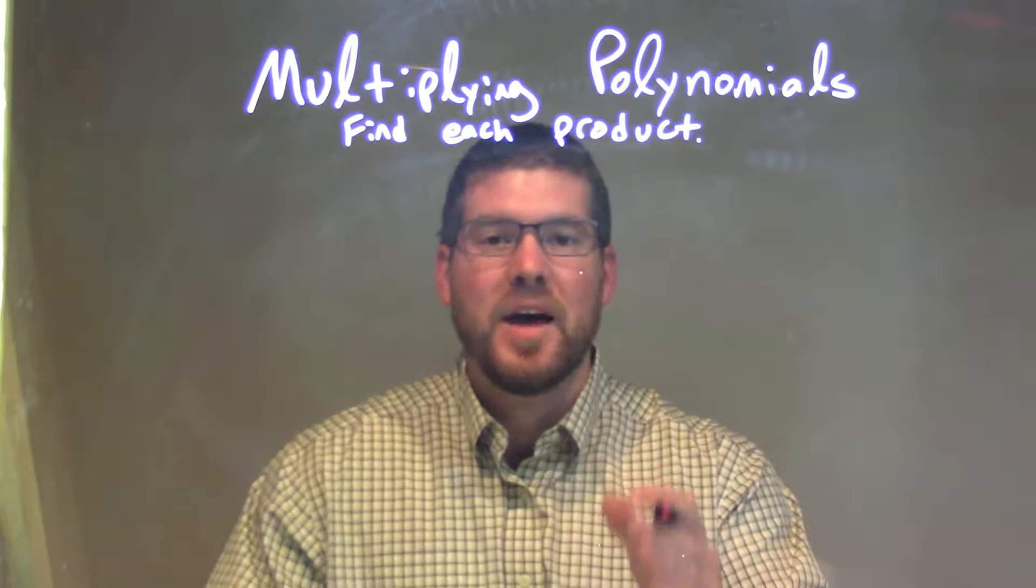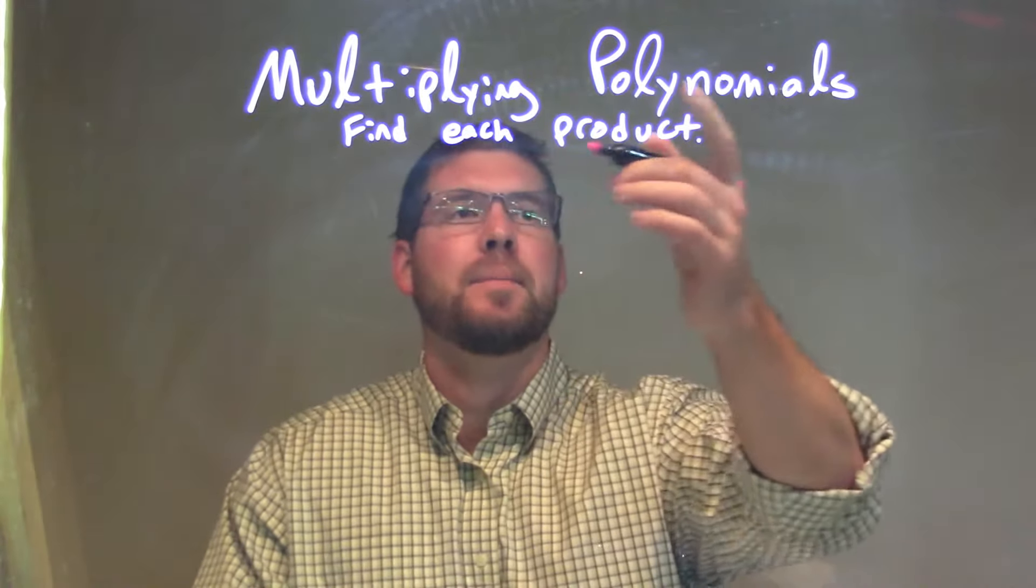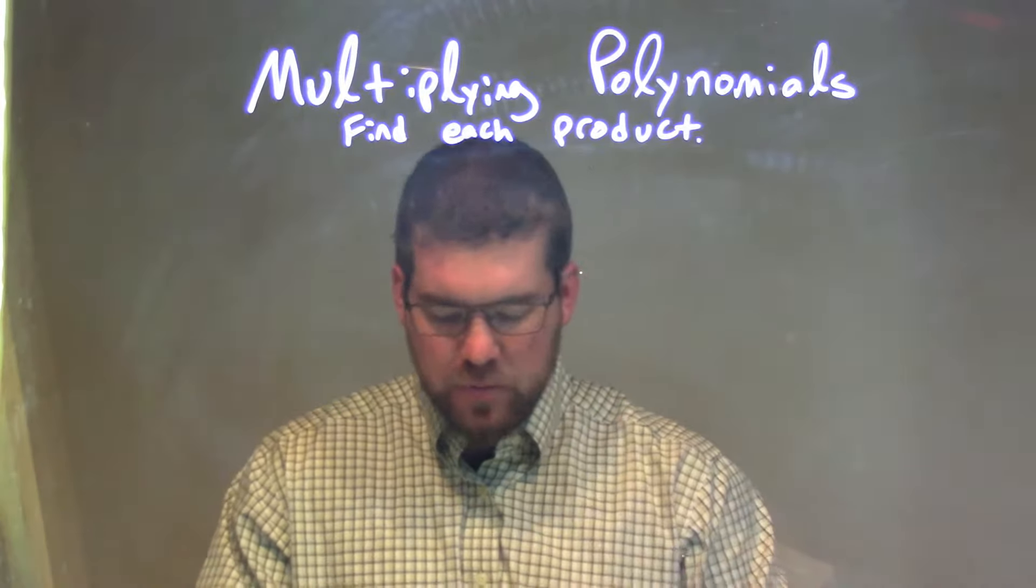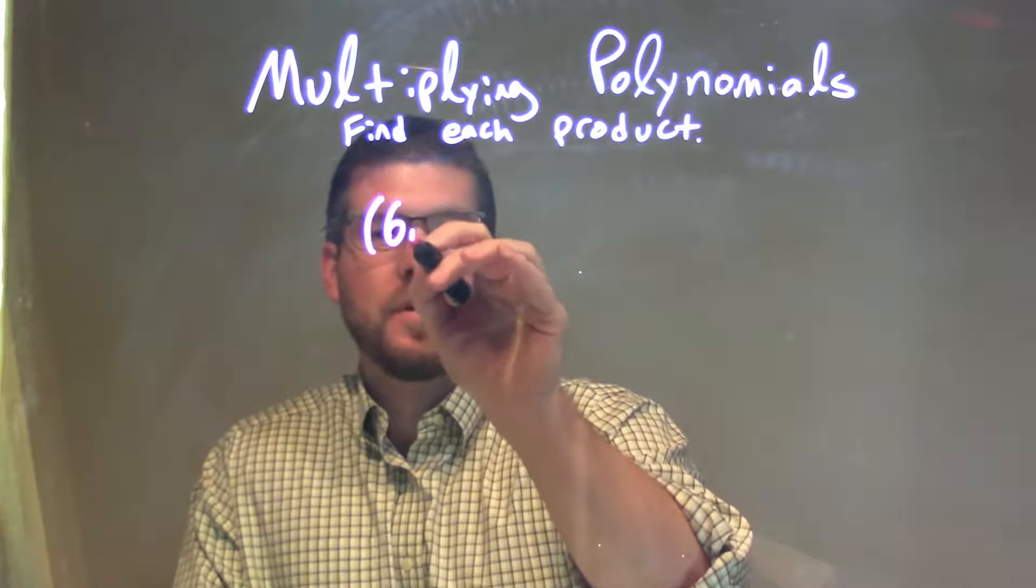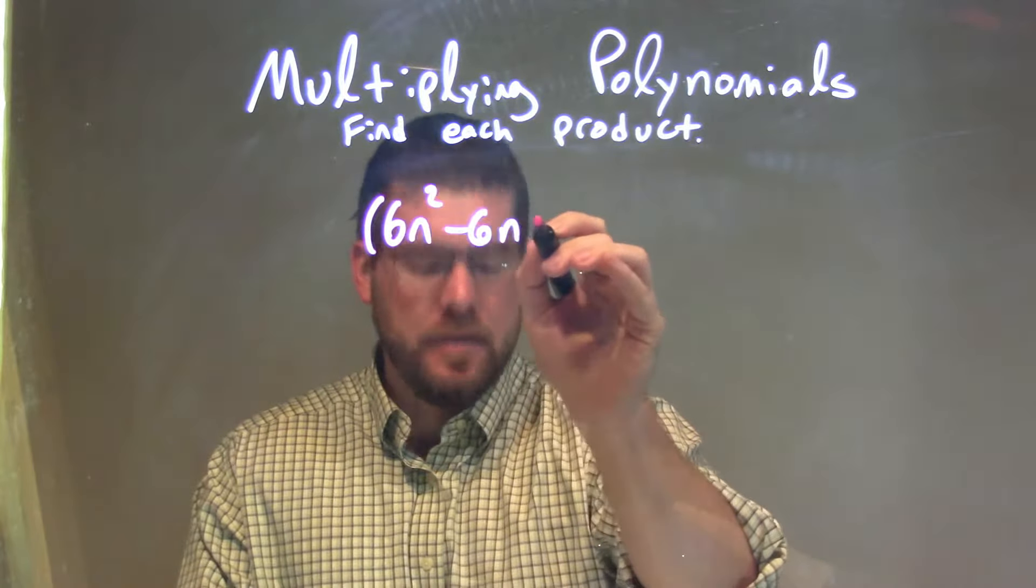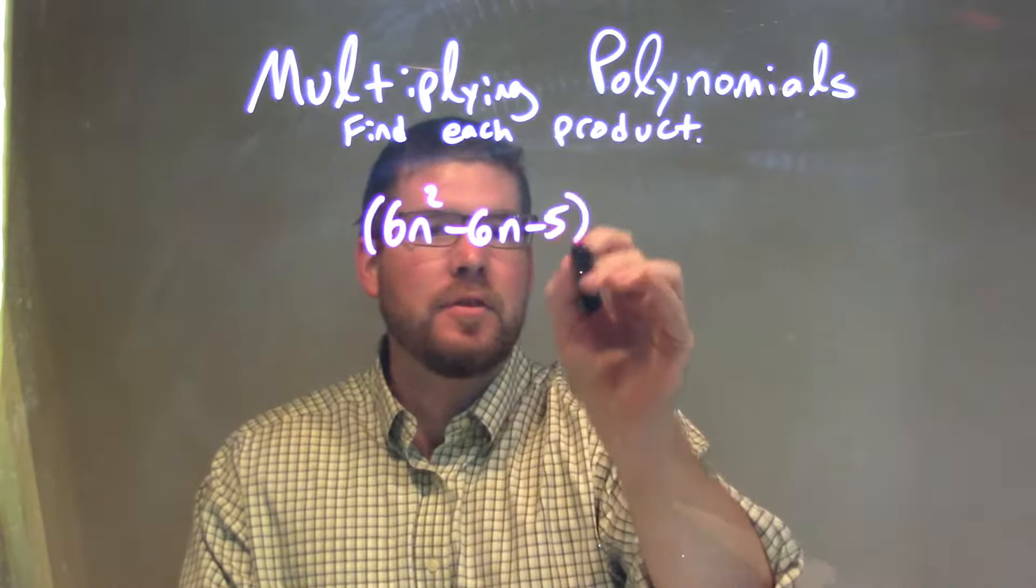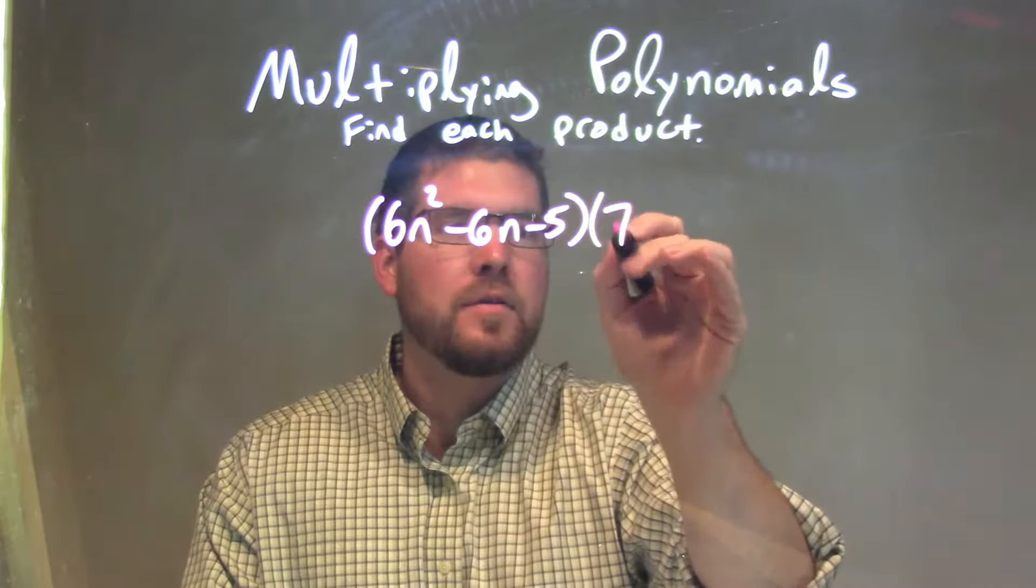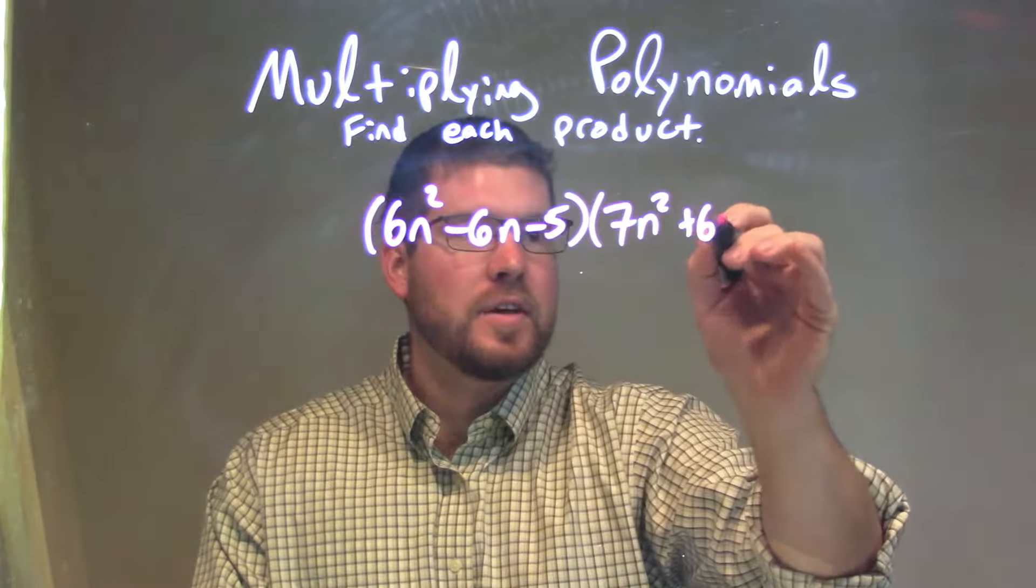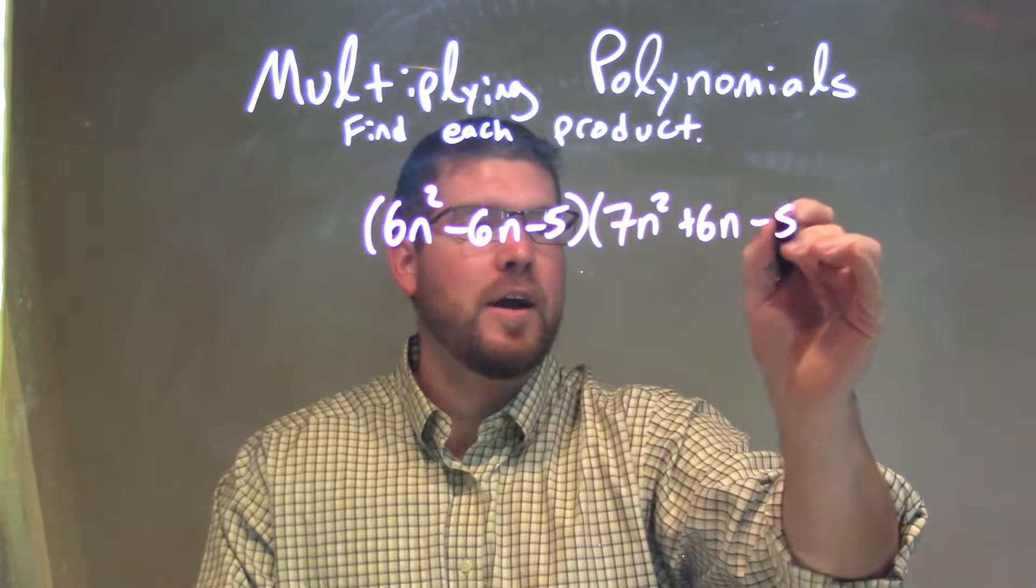Hi, I'm Sean Gannon from MinuteMath, and today we're going to learn about multiplying polynomials. So if I was given this problem here, 6n squared minus 6n minus 5 times 7n squared plus 6n minus 5.